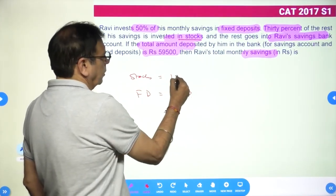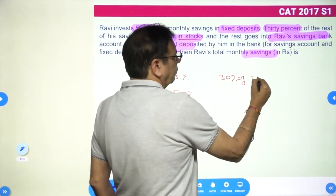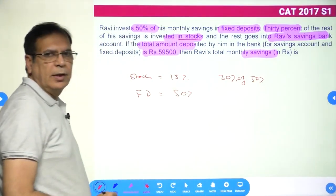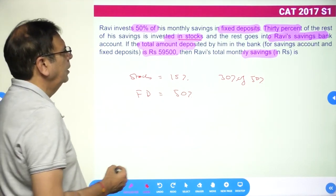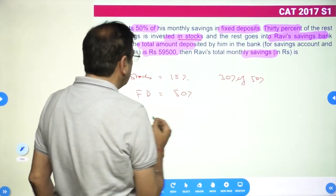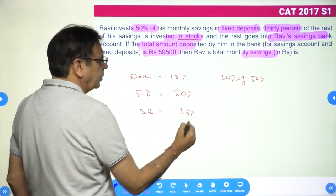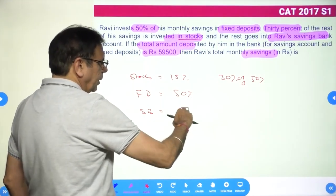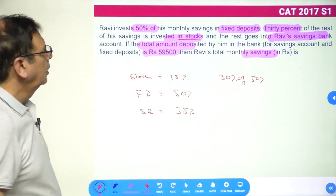Stocks is 15%, which is nothing but 30% of 50%: 0.3 × 0.5 or 0.3 × 50 equals 15%. The rest goes to his savings bank, so savings bank has the balance 35%.